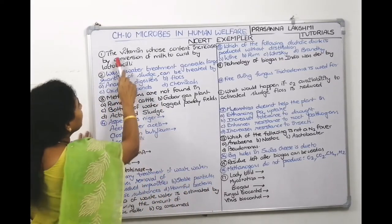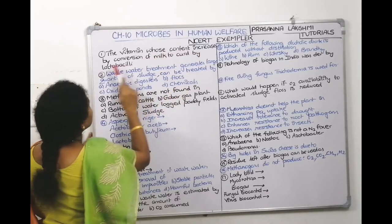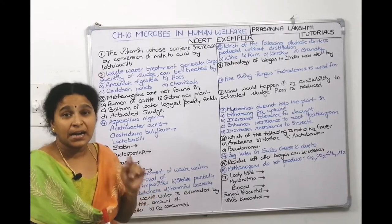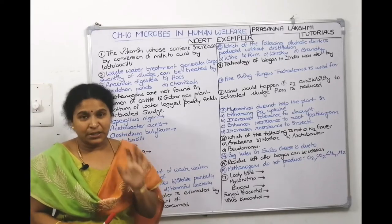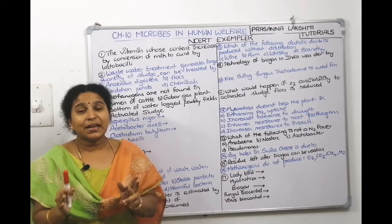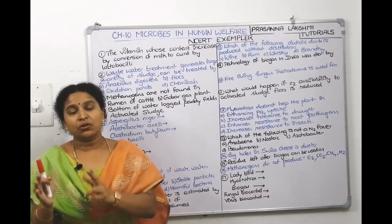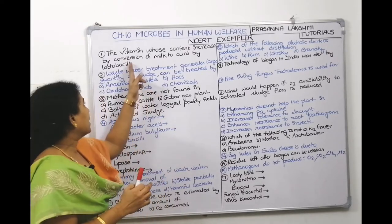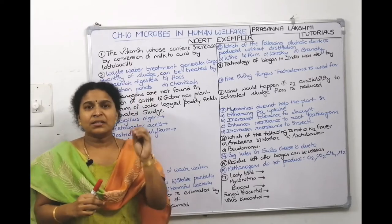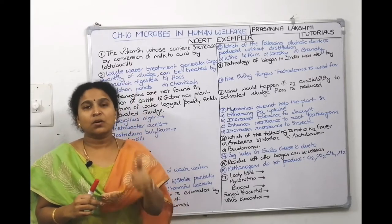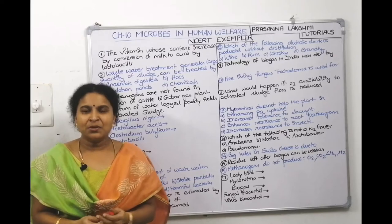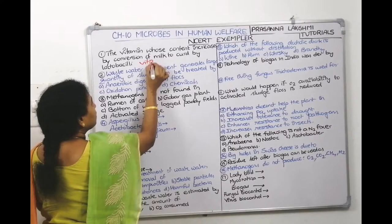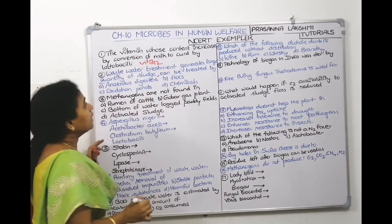The first question asks: the vitamin whose content increases by conversion of milk to curd by Lactobacilli — what is that vitamin? When milk is converted to curd, Lactobacillus secretes a vitamin into the curd. The answer is Vitamin B12. That is why we say curd is more nutritious than milk.